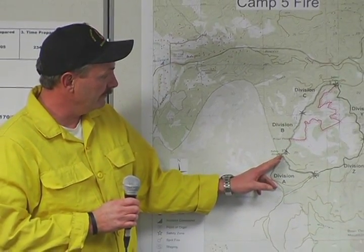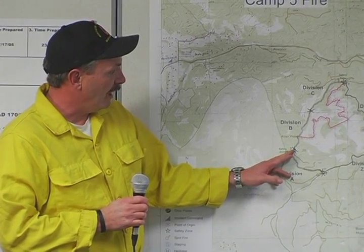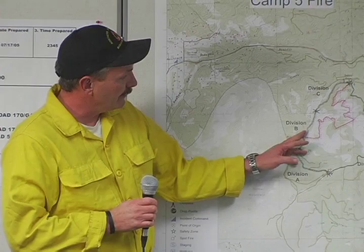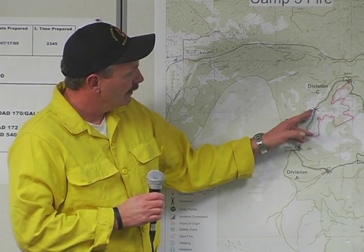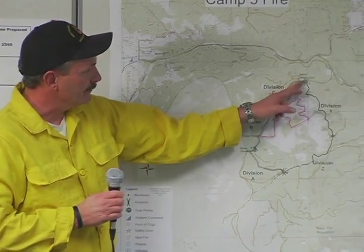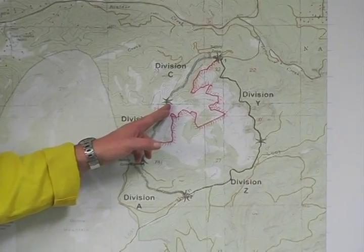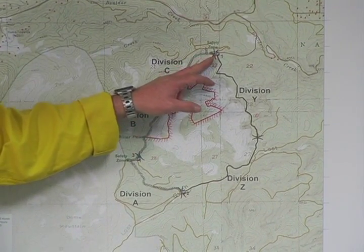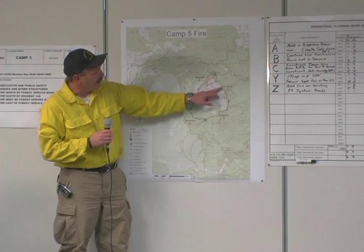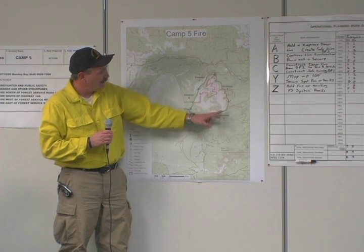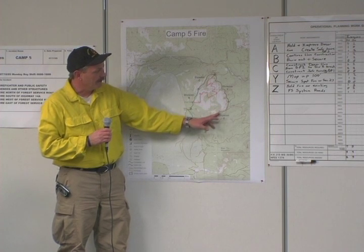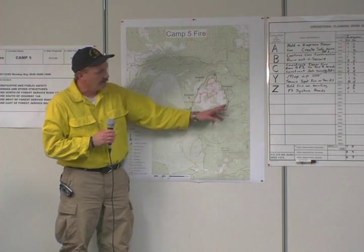Division Bravo — the line is in place for the most part, but we're continuing to do some burnout as we have a lot of unburned fuel between the fire line and the fire. Division Charlie — same thing; our dozer line is coming down from the division break trying to marry up with Division Bravo. Coming around into Division Yankee, this line is in and crews are patrolling and mopping up 100 feet in along existing forest service roads. And in Division Zulu, this is looking real good — we're basically patrolling and mopping up 100 feet in there also.